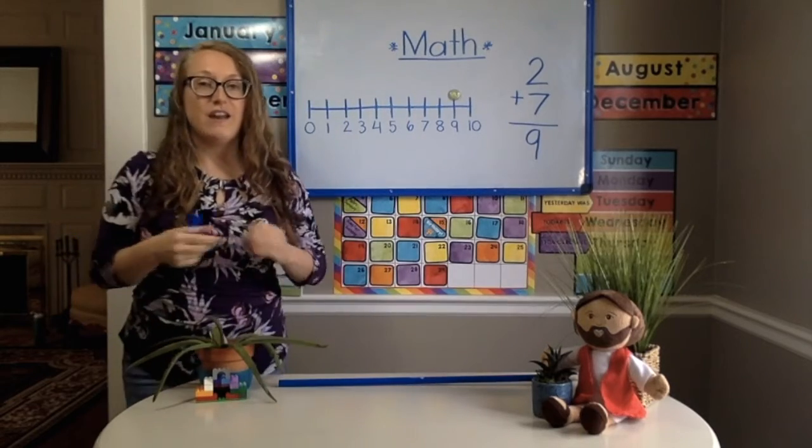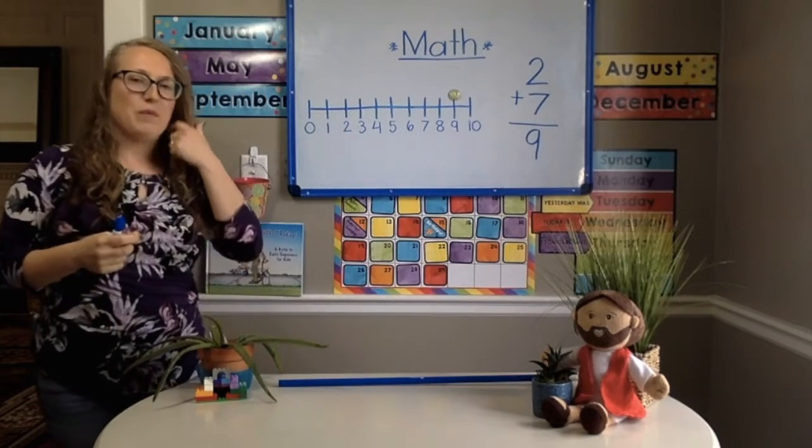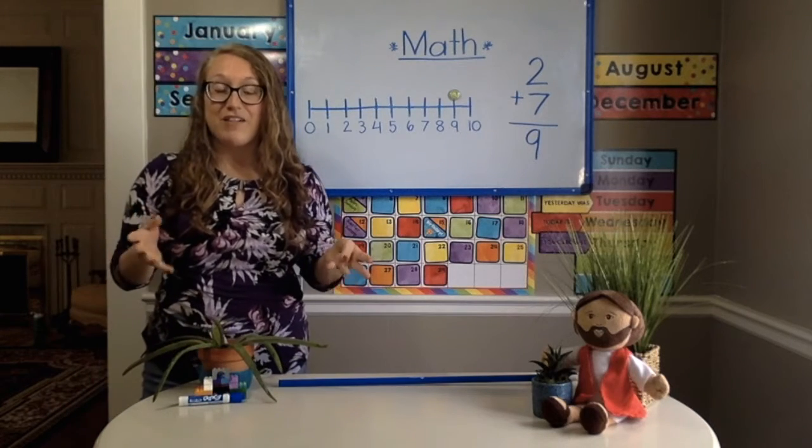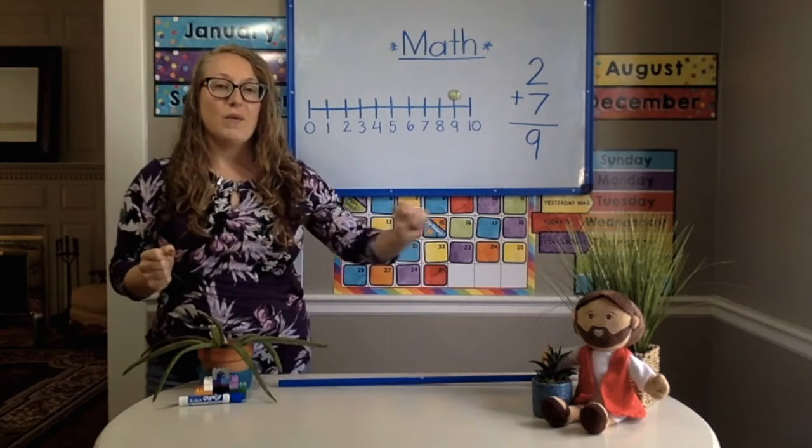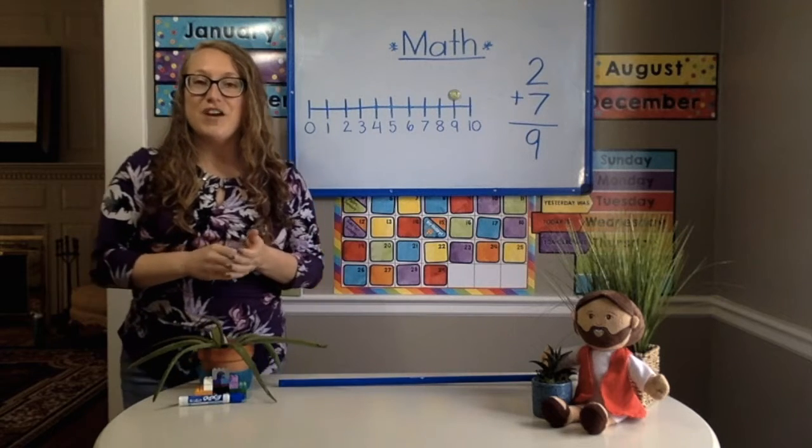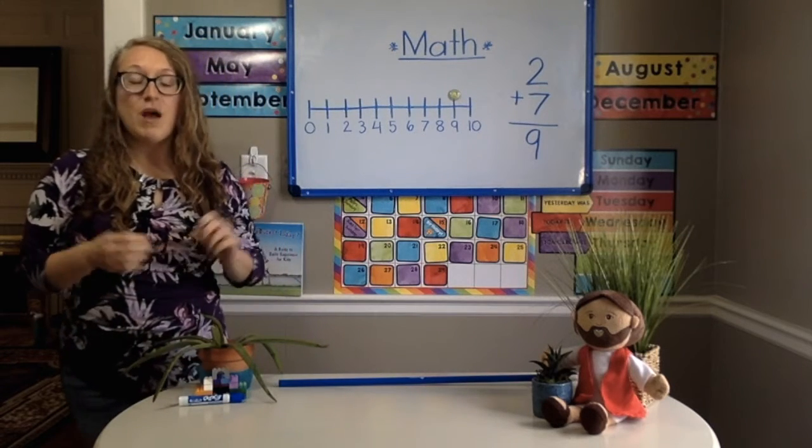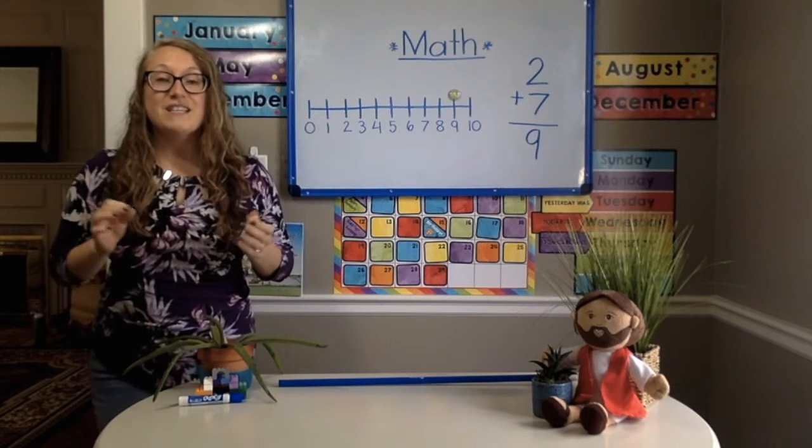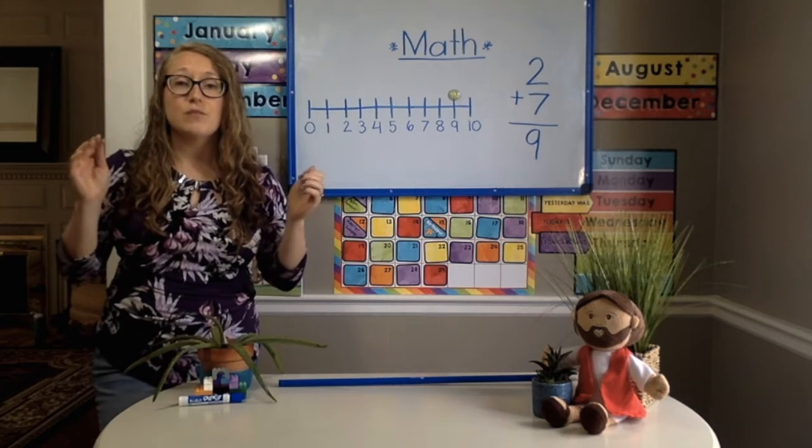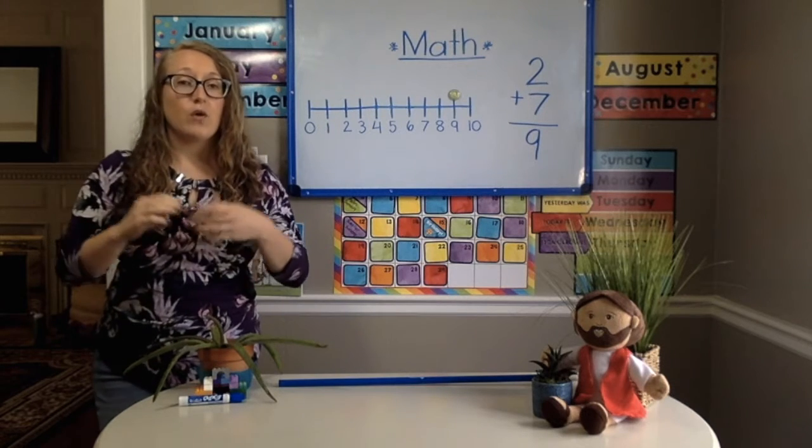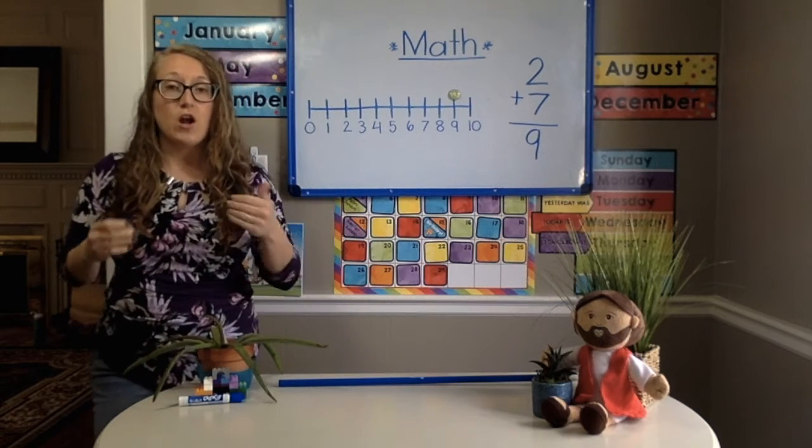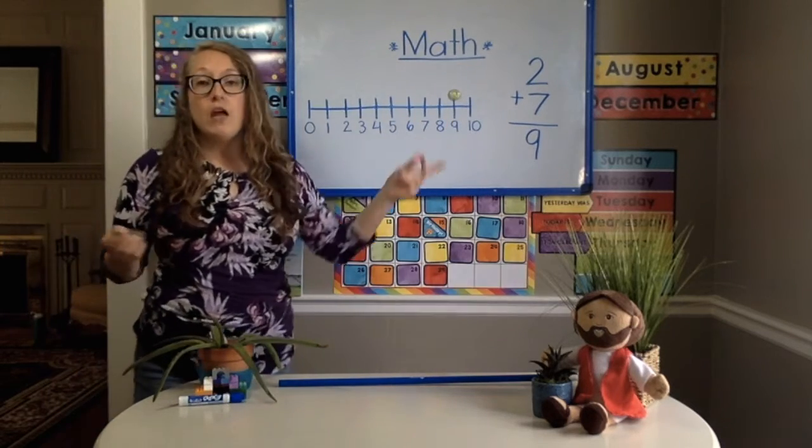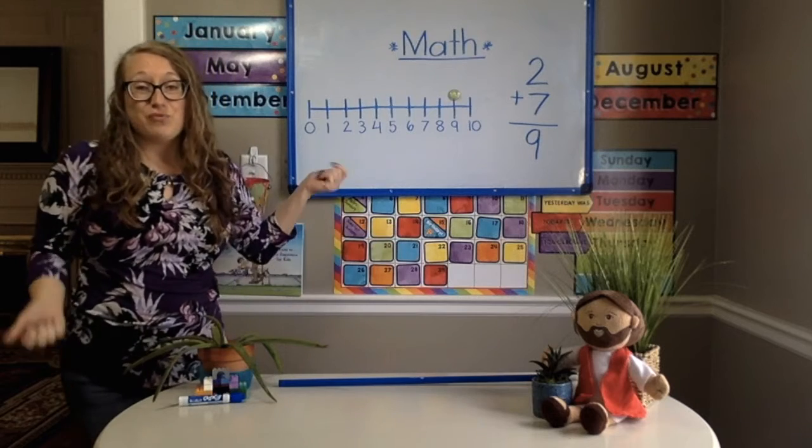You should have your own number line at home. If you still have your name tag from our classroom, you have a number line all the way at the bottom. Or, you could have printed one off that I put on our Hulu classroom. Or, you could have grabbed one when you came to pick up your work last week. So, kindergarten, if you don't have a number line, you can just take a piece of paper, cut it up, and you can ask your grown-up to help you. I just drew mine on here.